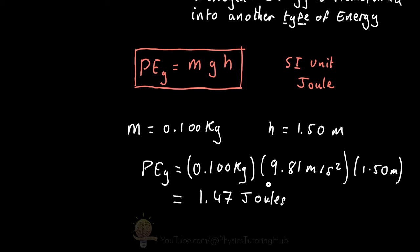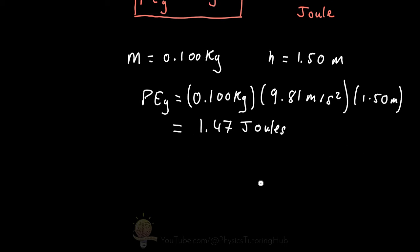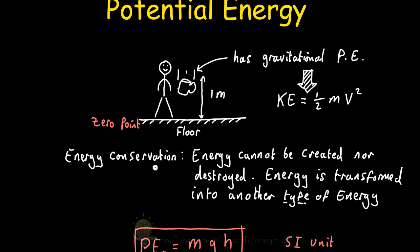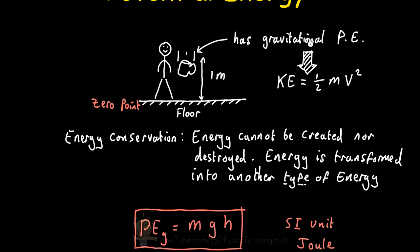What can we do with this value? We can work out the velocity of the cup as it hits the ground, because of the principle of energy conservation. The gravitational potential energy of 1.47 joules is going to be converted into kinetic energy, so the final kinetic energy as it hits the floor is also going to be 1.47 joules. In reality it won't be exactly 1.47 joules, but I'll explain why in a minute.